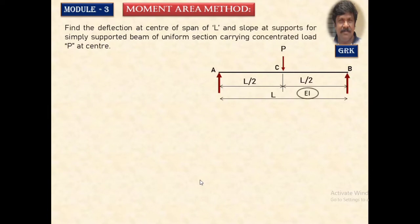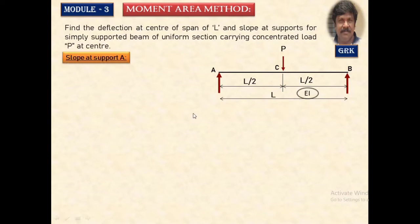Now consider another simply supported beam subjected to a central point load P placed at the center of the span, at distance L/2 from either support, having uniform flexural rigidity EI. Since it is symmetrically loaded, slope at A equals slope at B. Calculate one end and apply the opposite rotation direction to the other.